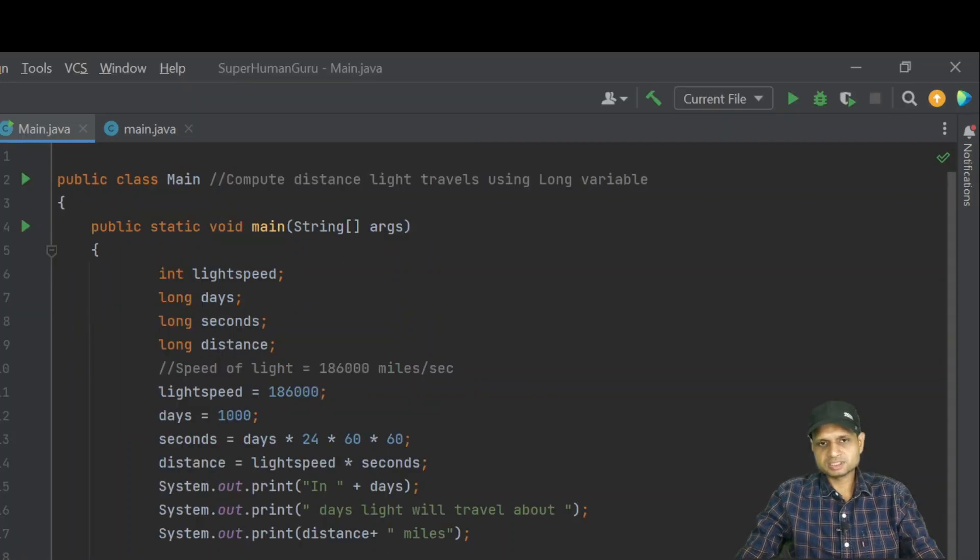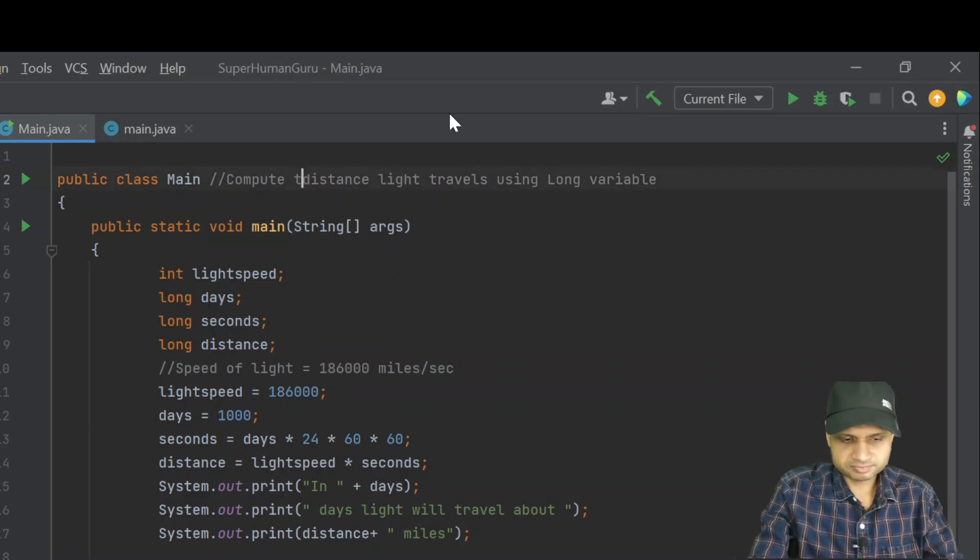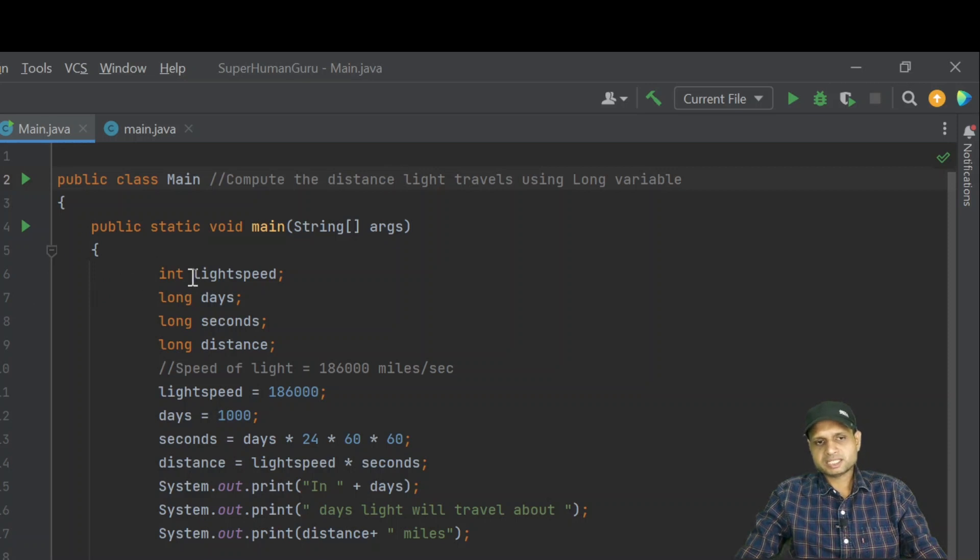What this program will do is compute the distance that light travels using long variables. We have defined as integers light speed and number of days, after that seconds and the distance. In one second, the speed of light is 186,000 miles per second. Next one is number of days. In a thousand days, if there is a ray of light, how much does it travel in thousand days.